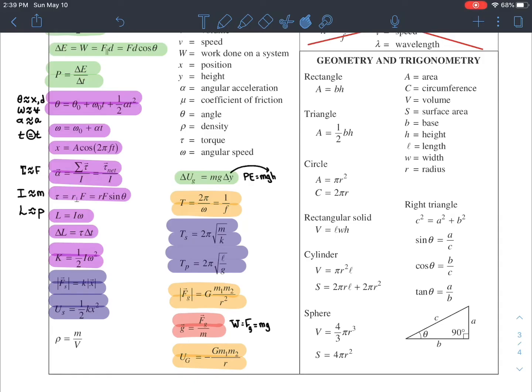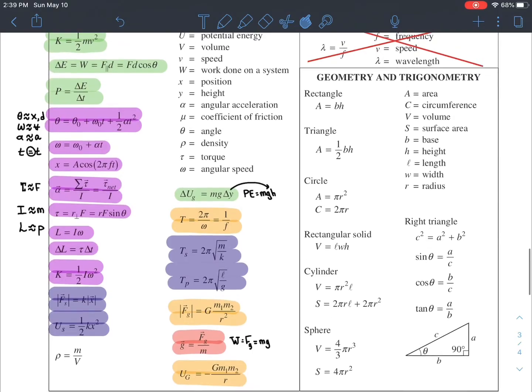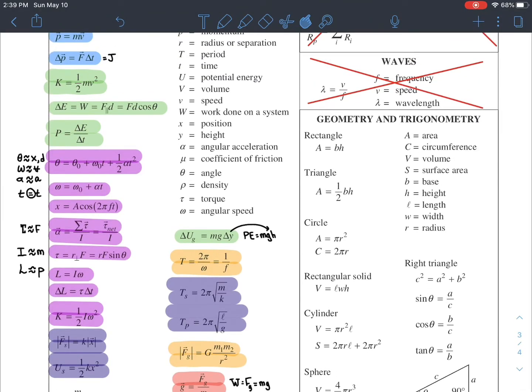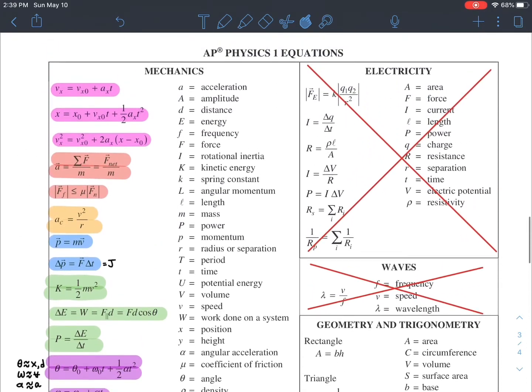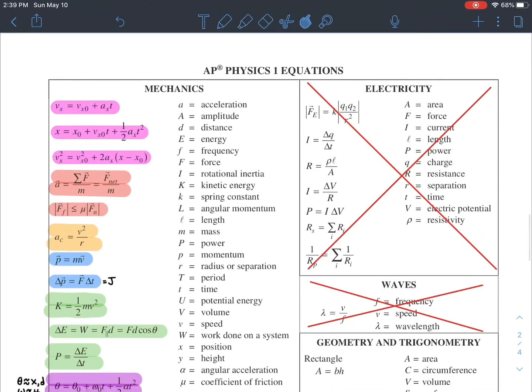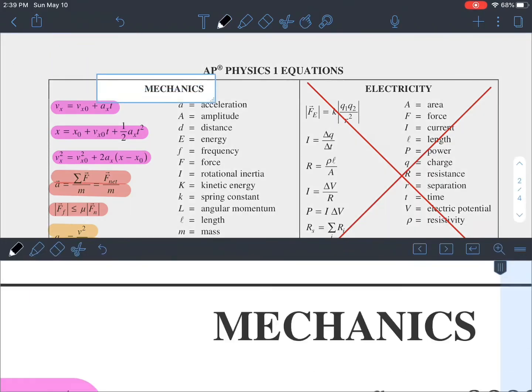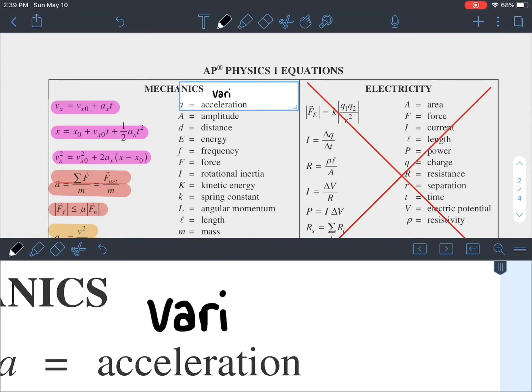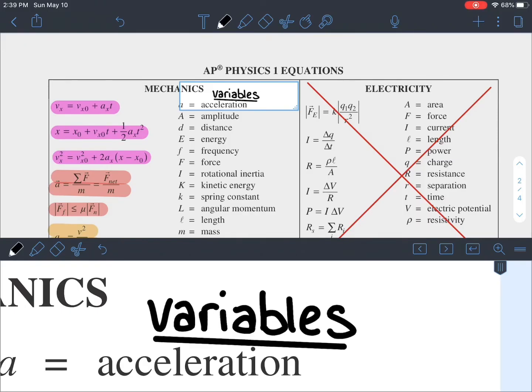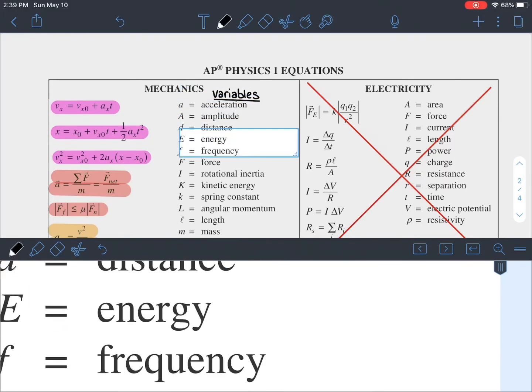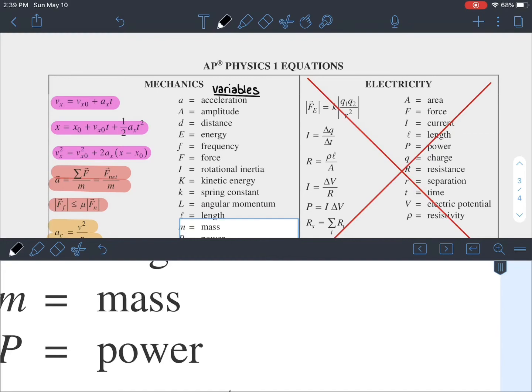We're going to take a look at your list of variables now. So we have here a list of each variable and what it represents. A really good exercise would be to go down this list and write down what the unit for each one of these is. So ideally, you should understand each of these letters when you look at them and know what they are. However, if you forget, if a problem asks you for torque, for example, you can look at this list and find the word torque, see that it's represented by the Greek letter tau, and then move over and look for the equations that contain the Greek letter tau.